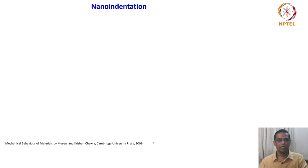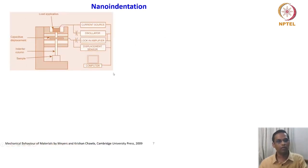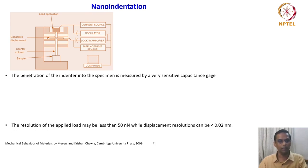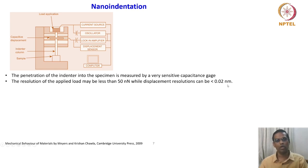Another sophisticated hardness testing tool is nano-indentation. This tool is quite popular because it uses very small loads and can measure hardness for even sub-micron features — you can go and test the hardness within a microstructure. The penetration of the indentor into the specimen is measured by a very sensitive capacitance gauge. The resolution of the applied load may be less than 50 nano-newtons, while displacement resolution can be as small as less than 0.02 nanometers, allowing hardness measurement at very small dimensions in the microstructure.